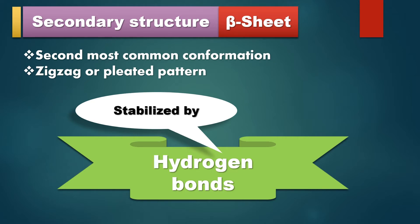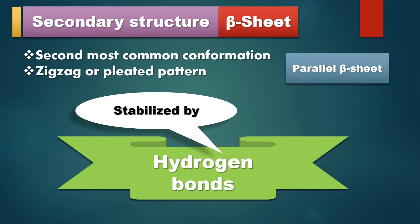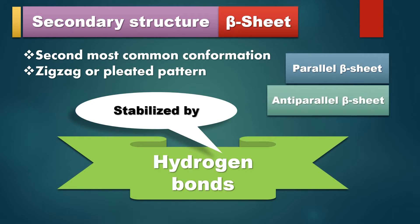There are two types of beta pleated sheet: one is parallel beta sheet, and another one is anti-parallel beta sheet. Today we are going to study both parallel and anti-parallel beta sheet.